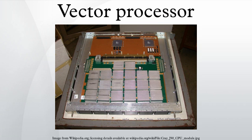Vector processing development began in the early 1960s at Westinghouse in their Solomon project. Solomon's goal was to dramatically increase math performance by using a large number of simple math co-processors under the control of a single master CPU. The CPU fed a single common instruction to all of the arithmetic logic units, one per cycle, but with a different data point for each one to work on. This allowed the Solomon machine to apply a single algorithm to a large dataset, fed in the form of an array. In 1962, Westinghouse canceled the project, but the effort was restarted at the University of Illinois as the ILLIAC-4. Their version of the design originally called for a 1 GFLOPS machine with 256 ALUs.